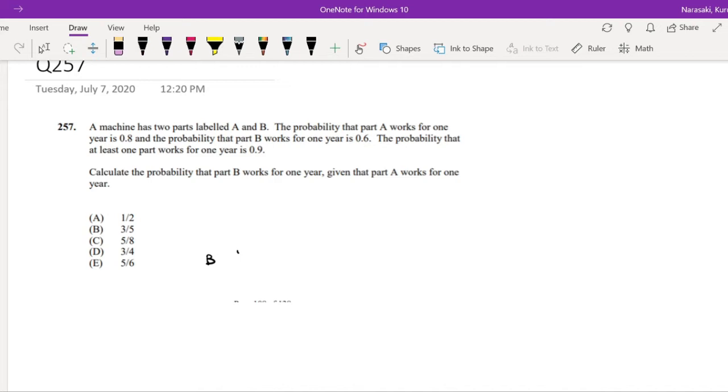Okay, well maybe I should do a Venn diagram instead. The probability that A works is 0.8, the probability that B works is 0.6, and the probability that at least one part works is 0.9, so that means the outside is 0.1.